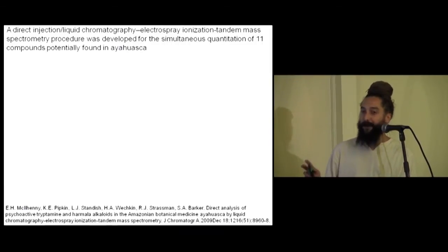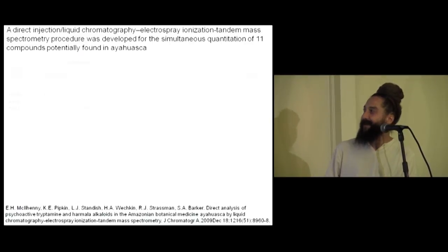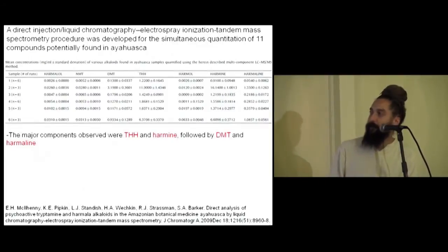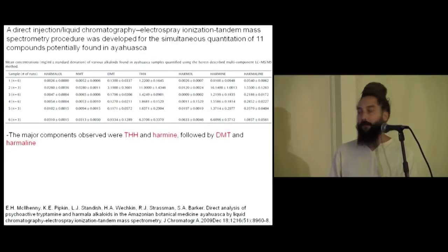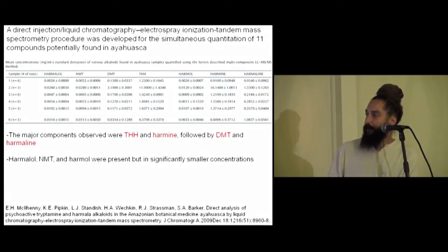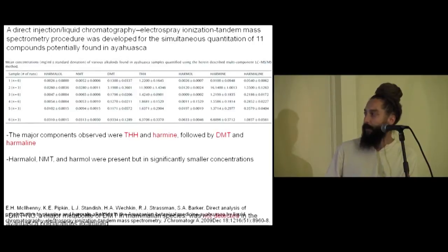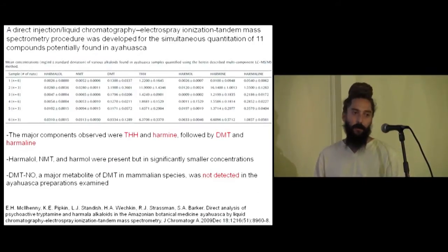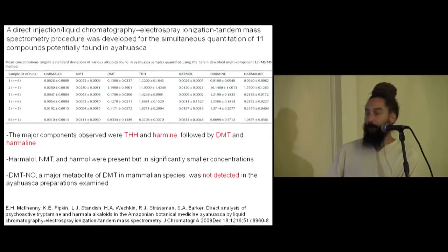I'm going to leave the details of the process to your own investigation. Here's some of the data. We found that the major components observed in ayahuasca were tetrahydroharmine and harmine, followed by DMT and harmaline. We found the other compounds at much lower concentrations. The main things you find are these beta-carbolines and DMT. And we found no DMT N-oxide — so it's only a metabolite created in a mammalian species.